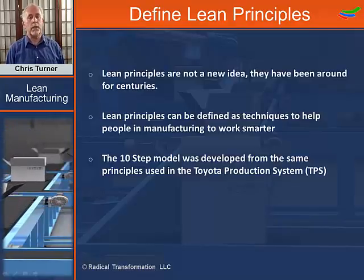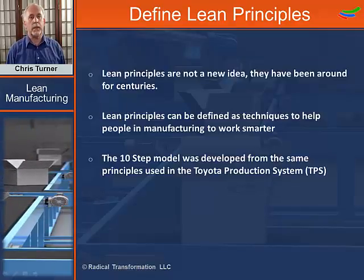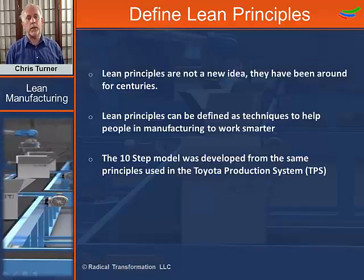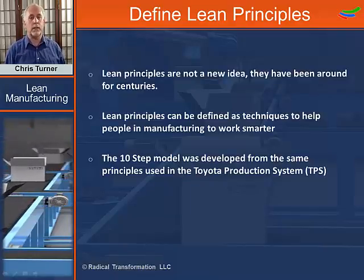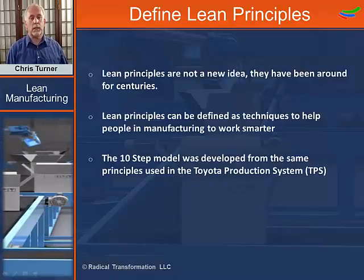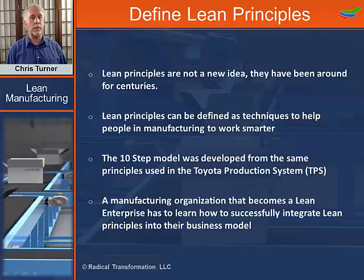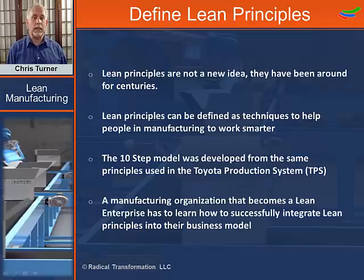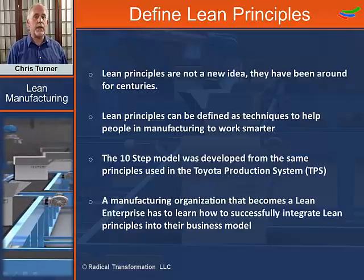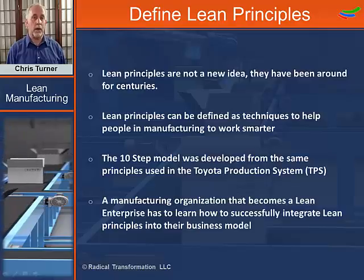The ten steps to become a lean enterprise training and implementation model was developed from the same principles used in the Toyota Production System. History has demonstrated one common principle that applies to every business: a manufacturing organization that becomes a lean enterprise has to learn how to successfully integrate lean principles into their business model. Without achieving this, the sustainment of any improvement over the long term will be very difficult, if not impossible.